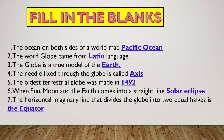On both sides of the world map - look at the globe and the world map. The globe is round and the map is flat. Here ocean means 'maha samudra.' On two sides of the map you can see specific oceans - the biggest ocean. The word 'globe' came from the Latin language. The globe is a true model of the Earth. The needle fixed through the globe is called the axis. The oldest terrestrial globe was made in 1492.